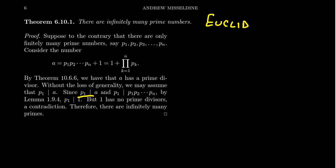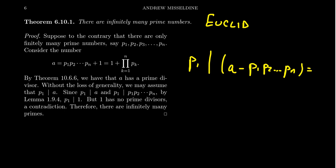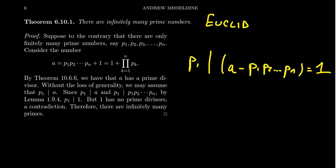If P1 divides A and P1 divides the primorial, then P1 also divides their difference: P1 divides A minus the product P1·P2·...·Pn. But this difference equals one. By a previous lemma, if a divisor divides two numbers, it also divides their difference. So P1 has to divide one. But one doesn't have a prime divisor — all primes have to be larger than one. So on one hand, one has a prime divisor, and on the other, one doesn't have a prime divisor. This is a contradiction.